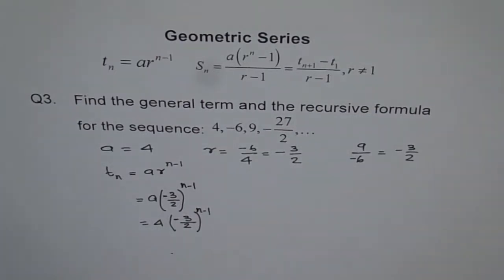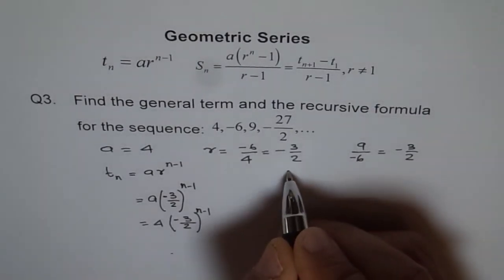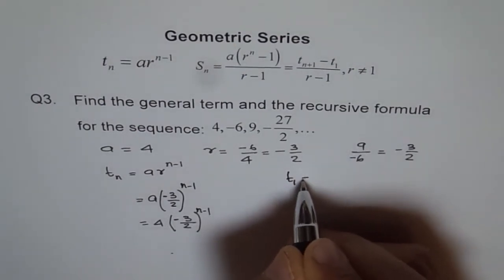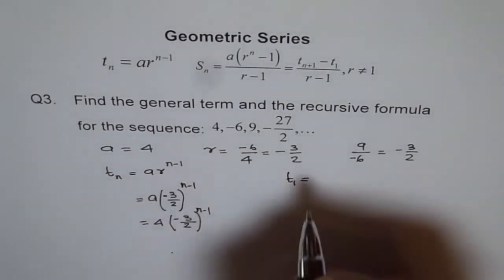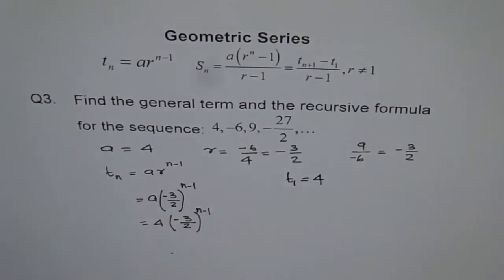we have to write a formula which is dependent on the previous term value. So normally in every recursive formula, the first term should be defined. So in our case, the first term is T1, which equals A, 4 in this case. First term is 4.